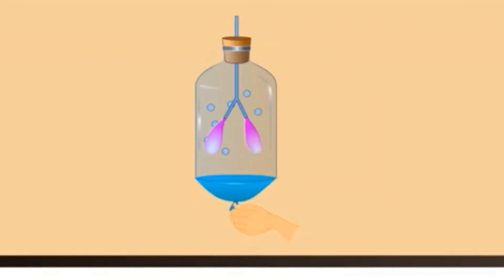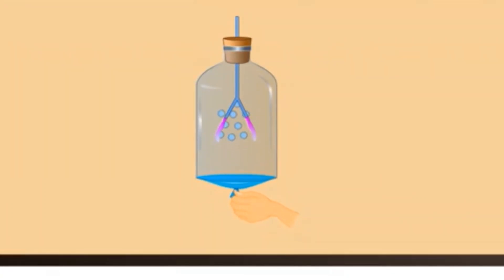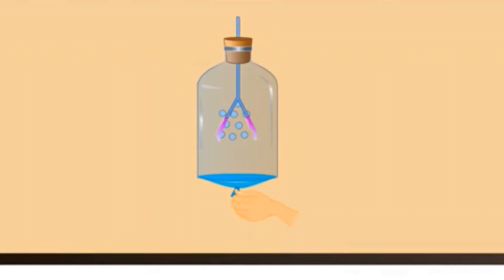When we push the rubber sheet inside, the space in the jar is reduced and the pressure is increased. This pushes the air out of the balloons. The balloons get deflated.